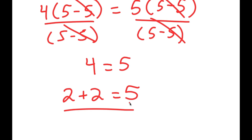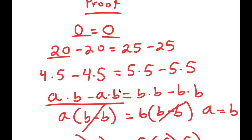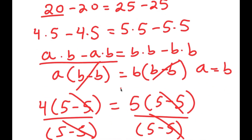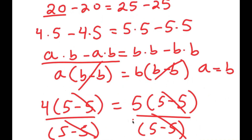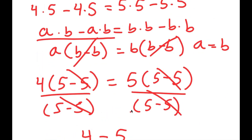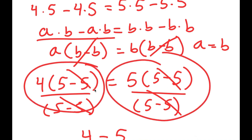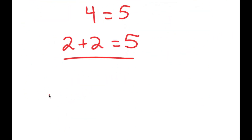Now I know what you're thinking — this is mathematically incorrect, right? How can 2 plus 2 equal 5 when 2 plus 2 is equal to 4? Well, look back here and try to figure out where I made an error. The error is actually right here in this step, where I divided both sides by 5 minus 5.